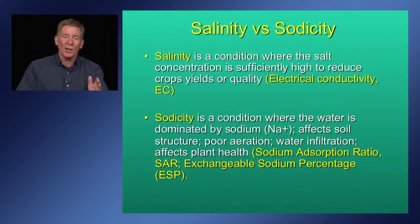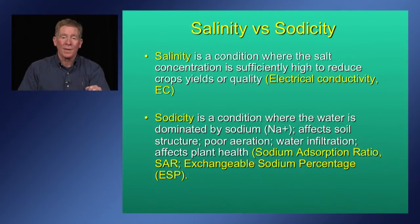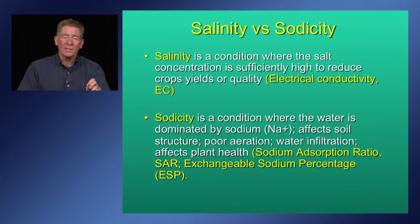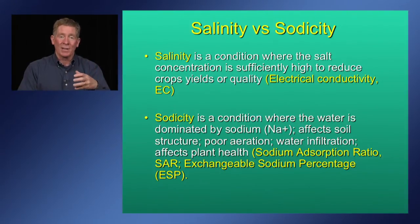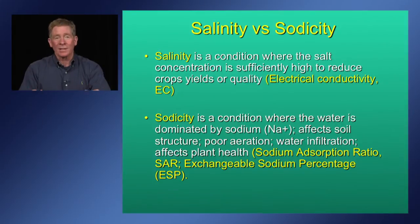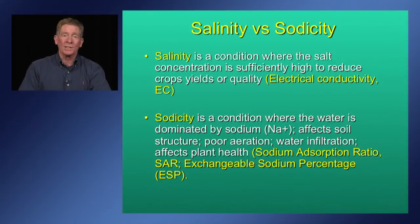Salinity is a condition where the salt concentration is sufficiently high to cause a reduction in crop growth or quality. The unit used to characterize salinity is the electrical conductivity of the water, or EC. Sodicity is a different condition, where the cations in the irrigation water are dominated by sodium over calcium and magnesium — analogous to soft water. The problem with sodic water in agriculture is that it can cause soil aggregates to break apart.